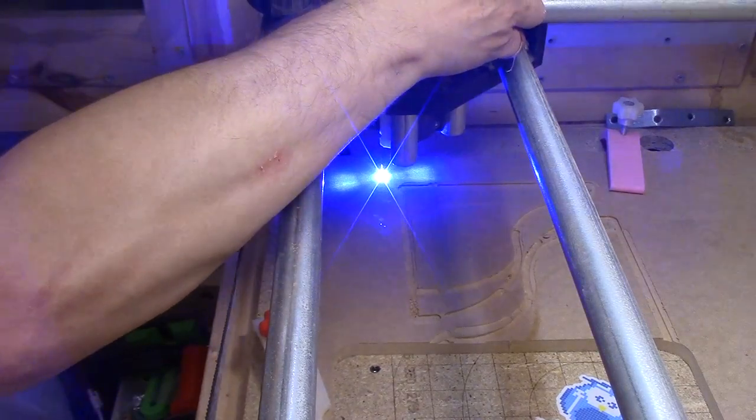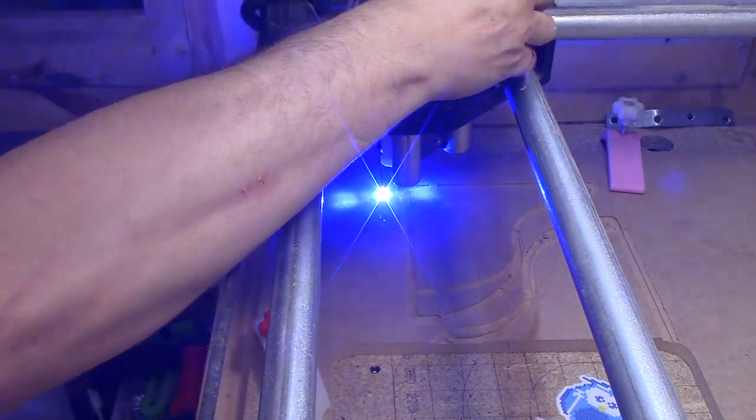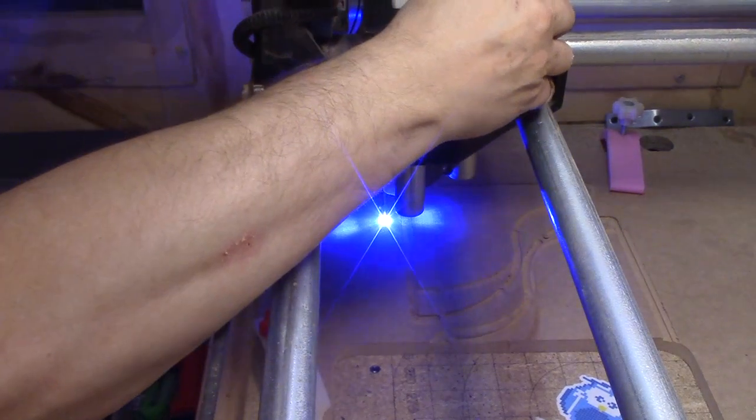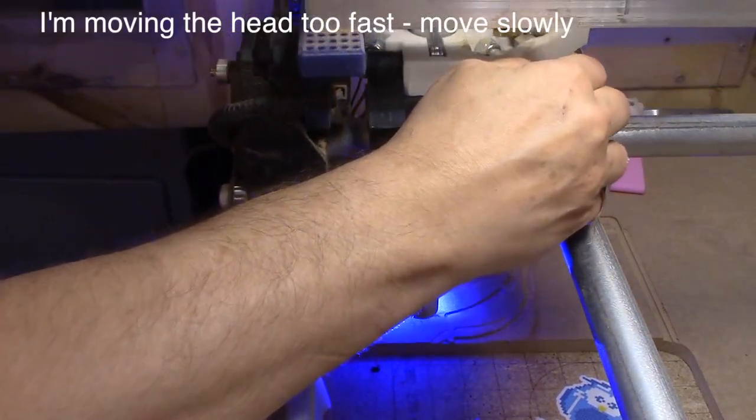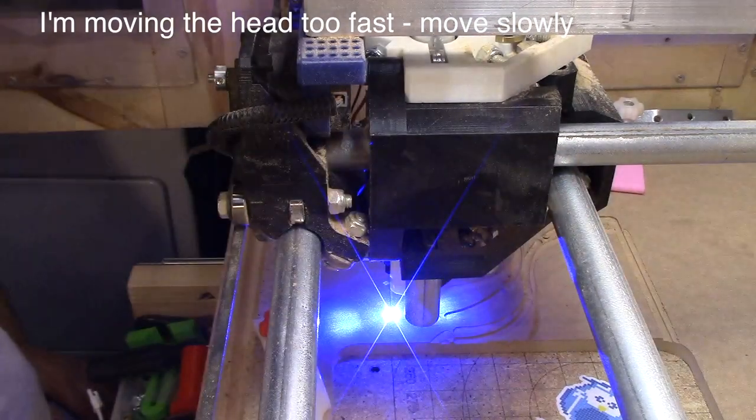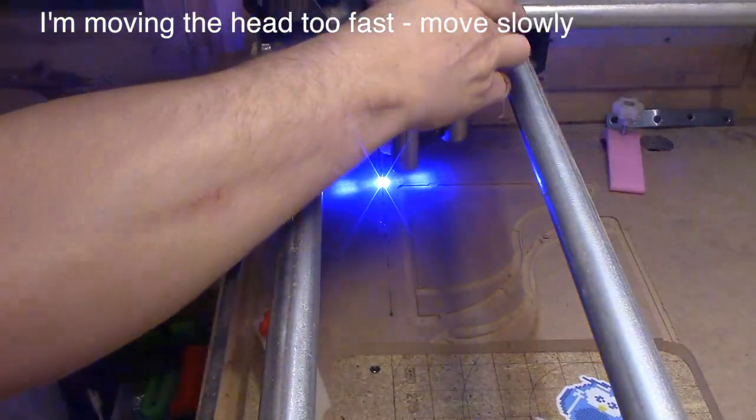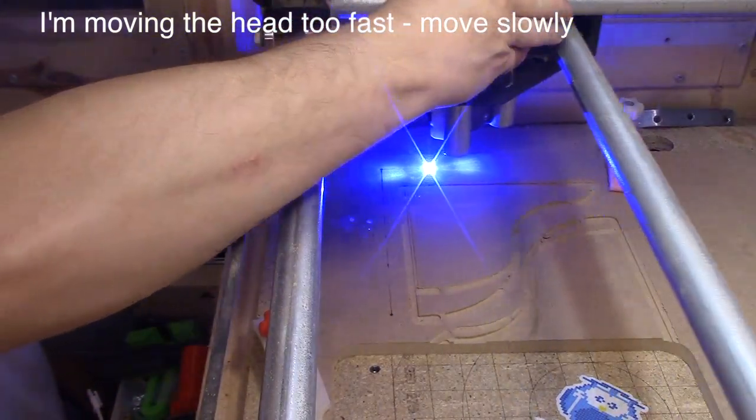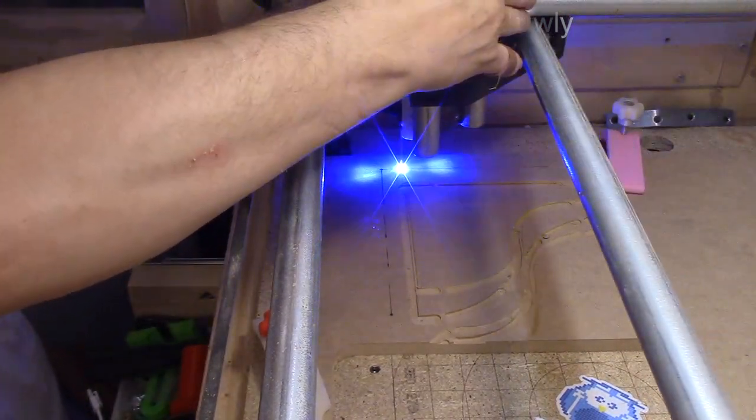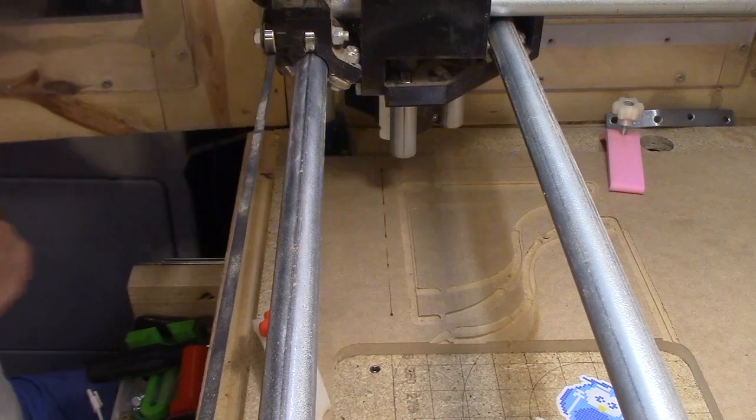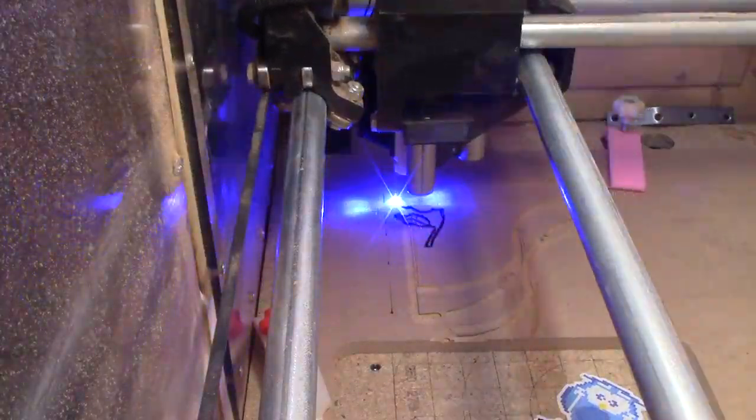I'm just going to slowly pull this guy this way just to make a line in the board there. Doesn't even have to be a good line. There we go. Over here real quick and make a line that way, just so I have something to line up the wood. Just manually moving the laser. Perfect, and I'll just bring that off.